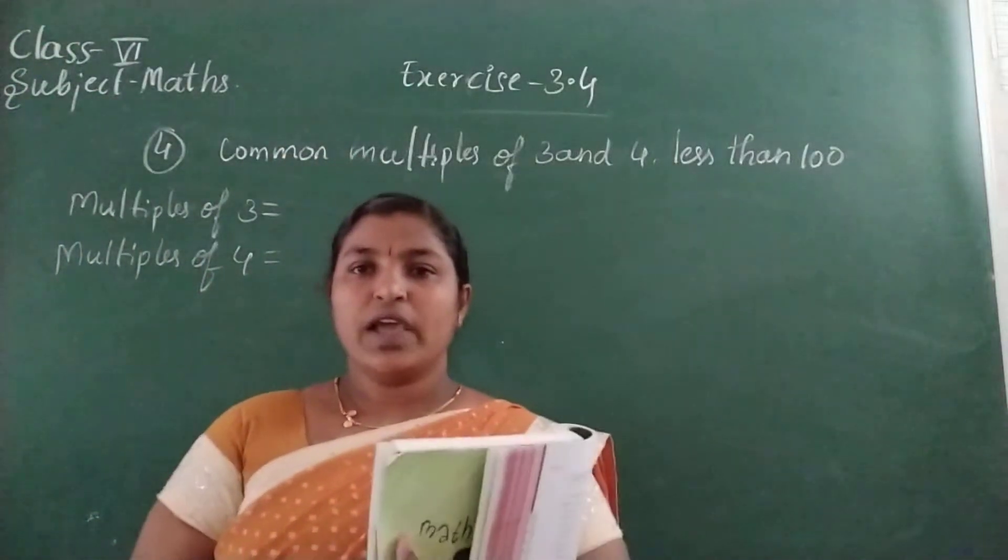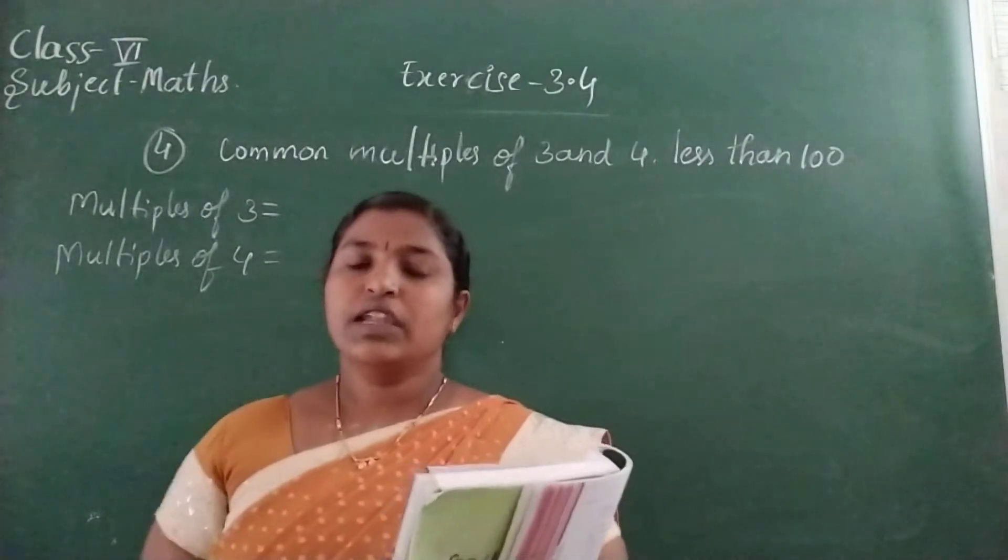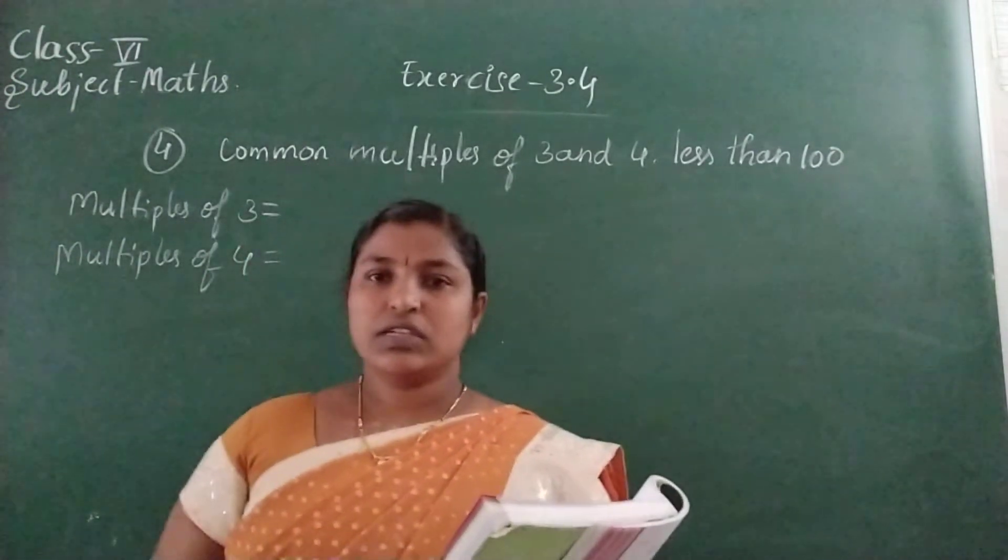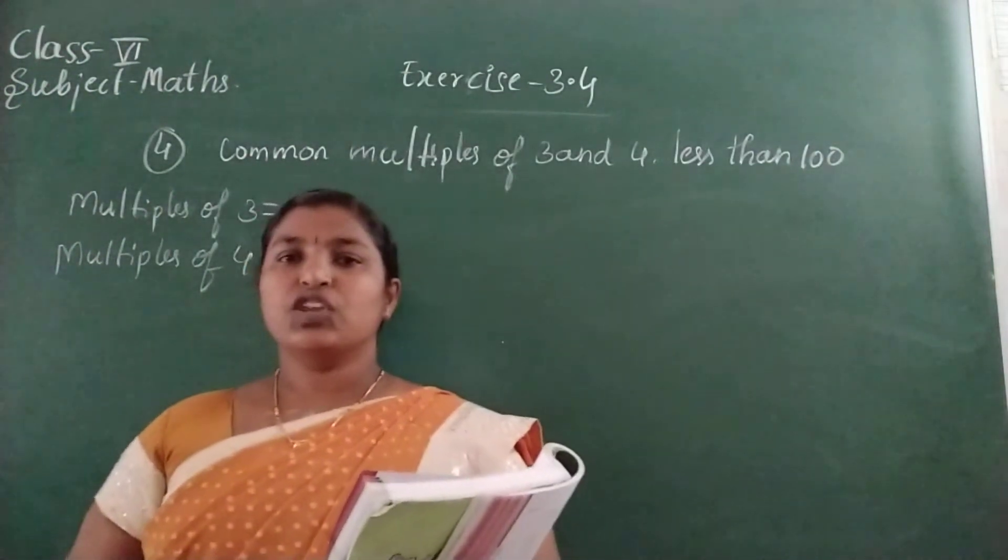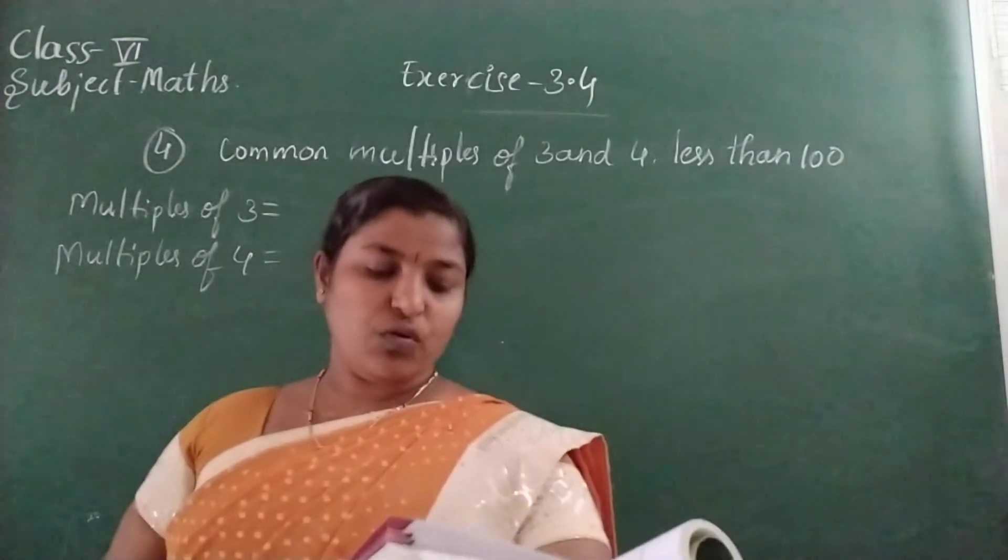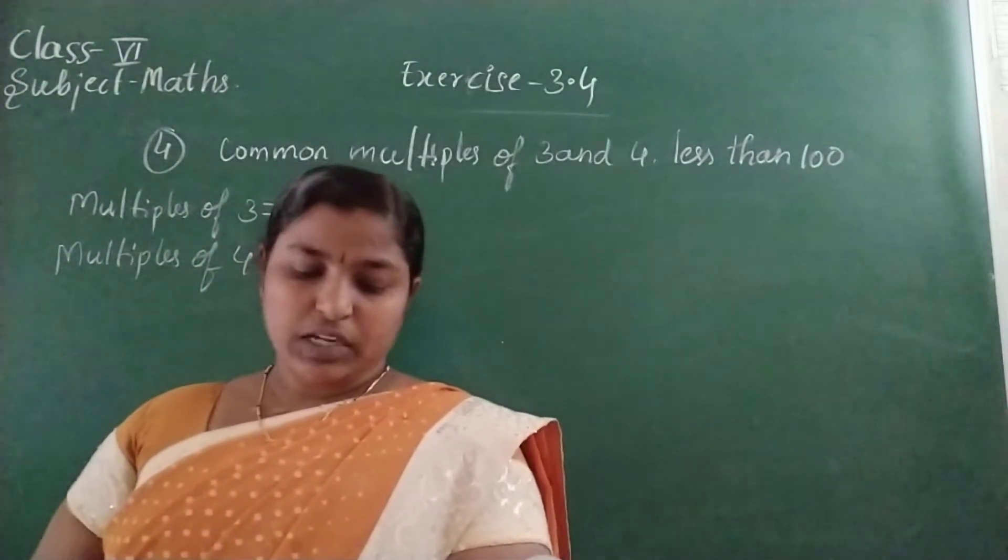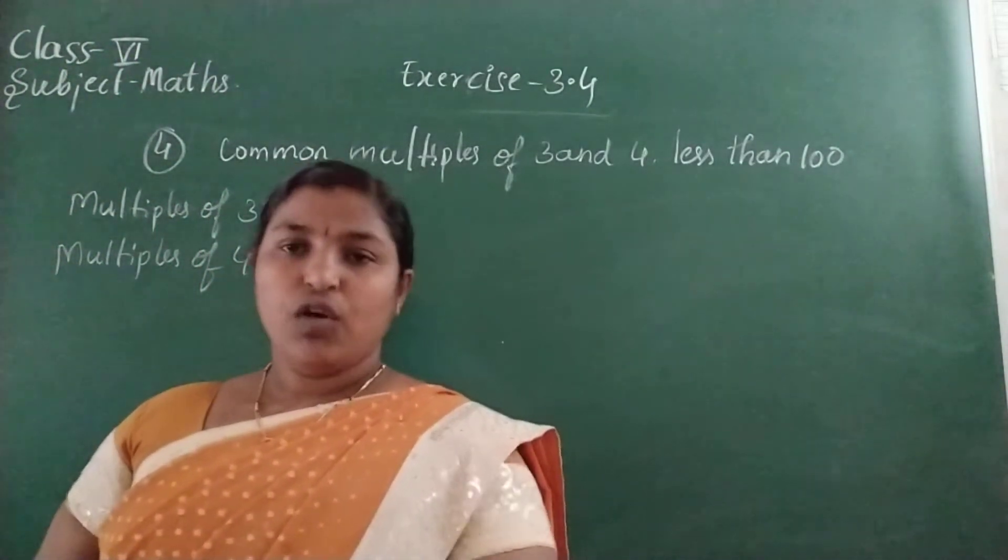Hello children, welcome to Keralakam Memorial CBSE online classes. Yesterday we started solving exercise 3.4. Let's continue that. Now question number 4: Write all the numbers less than 100 which are common multiples of 3 and 4.